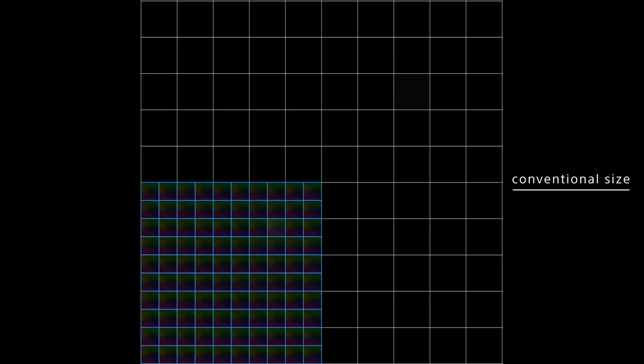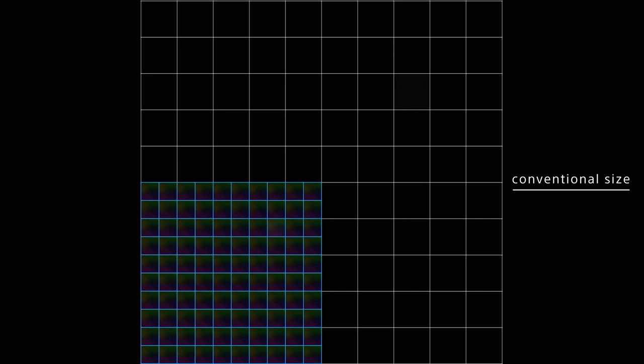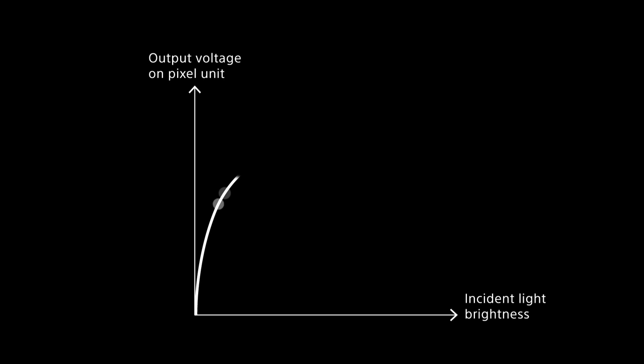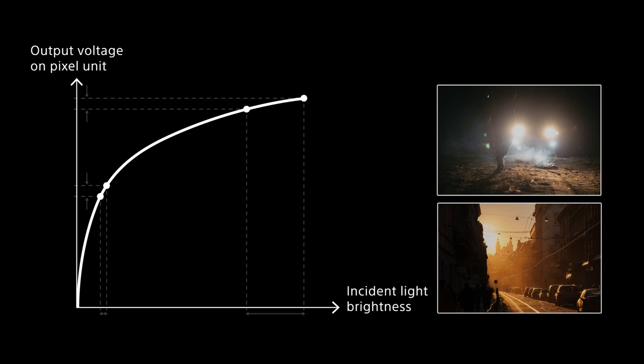In the entire sensor surface, reduction of circuit area contributes to low latency. If the size is the same as a conventional frame-based sensor, both high resolution and high sensitivity can be achieved. Capturing the change according to the rate of change in brightness, the sensor captures the subject with high dynamic range from low to high illuminance.